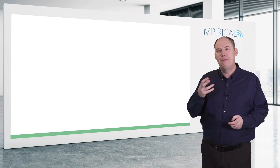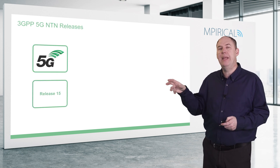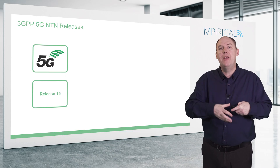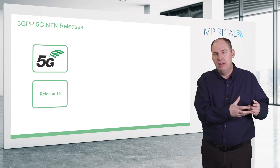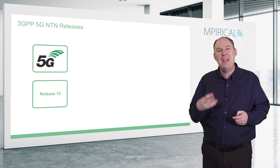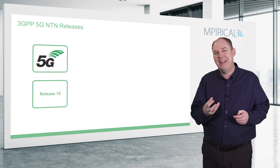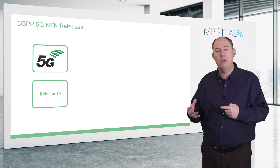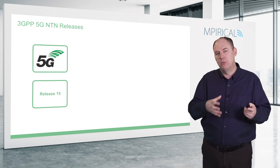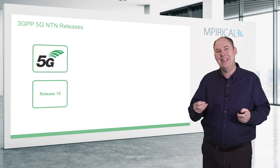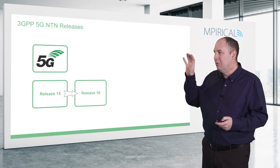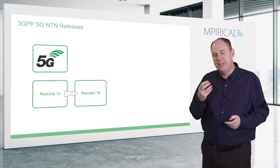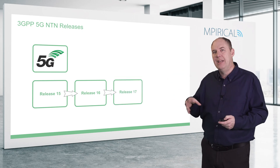With respect to 5G, it started in 3GPP Release 15. 3GPP has many versions, and with newer versions we get new features — going back to early versions 3, 4, 5, 6, 7, and then at Release 15 we added 5G capability. However, 5G non-terrestrial networks weren't the focus at that point. It wasn't until later releases that 5G NTN operation was standardized. Release 16 started having lots of work items on NTN, but the majority of 5G NTN detail was added in Release 17.